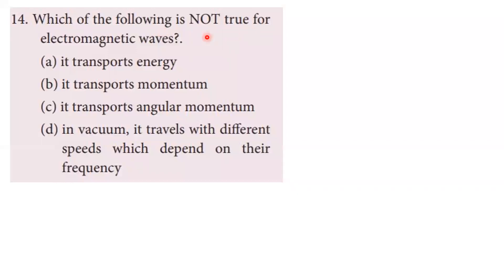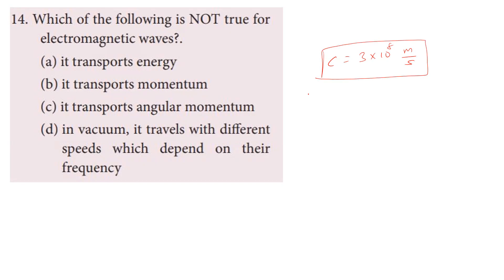Fourteenth question: which of the following is not true for electromagnetic waves? Electromagnetic waves transport energy, momentum, and angular momentum from one place to another. In vacuum, all electromagnetic waves travel at c = 3×10⁸ m/s regardless of frequency. However, in a medium, the velocity depends on frequency. The false statement is that different frequencies of EM waves travel with different speeds in vacuum — they all travel at the same speed. The fourth option is the correct answer.